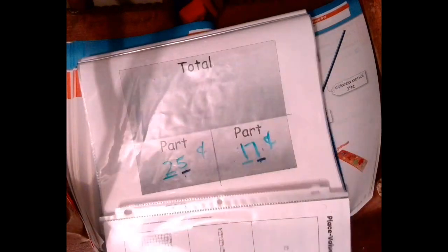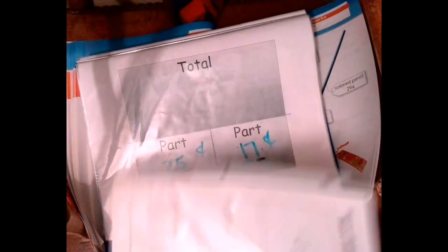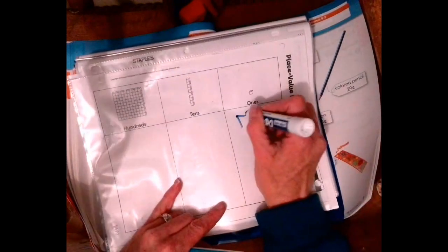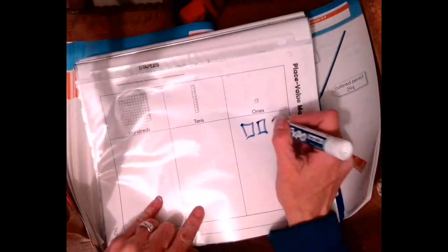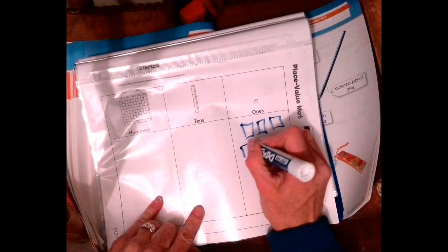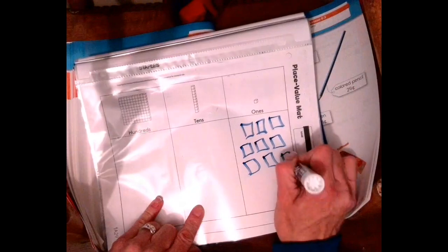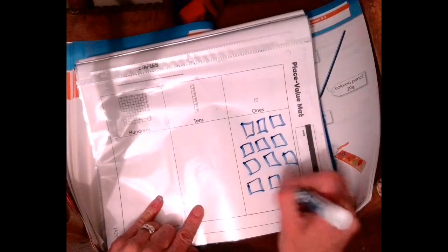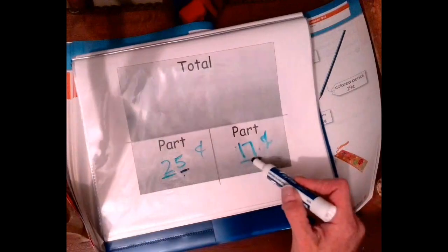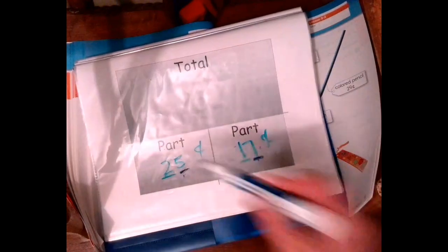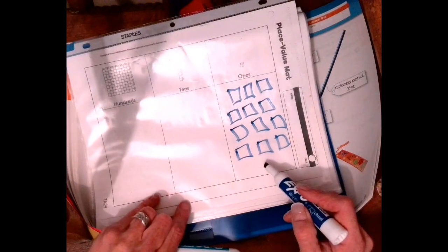If I was to put those numbers, we have a seven and a five in the ones, so I'm going to draw those. One, two, three, four, five, six, seven, one, two, three, four, five. So I took these two numbers, the ones digit, the seven and the five, and I put them in the ones place value.